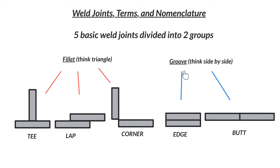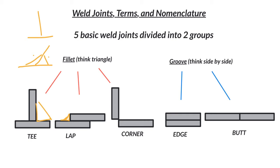We've got a fillet and we've got a groove weld. When you think of a fillet, think of something triangular — we're going to fill out this little triangular cross-section. The T doesn't have to be a perfect 90; it can have acute and obtuse angles, but it's still a type of triangle. T, lap, and corner are all fillet welds because they have some type of triangular weldment. When you think of groove, think of side-by-side — so you've got edge welds and butt welds. When you learn positions, remember F for fillet and G for groove.